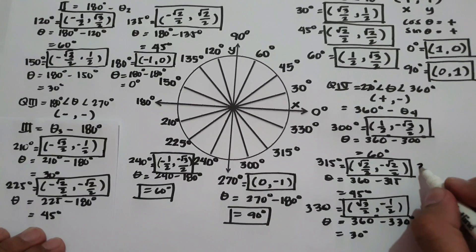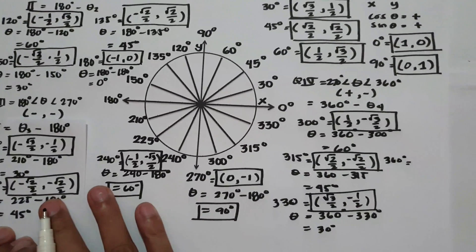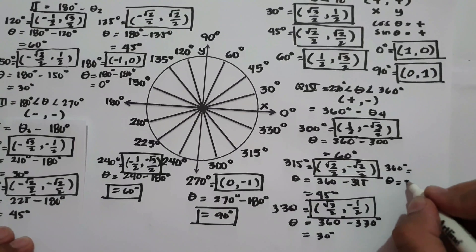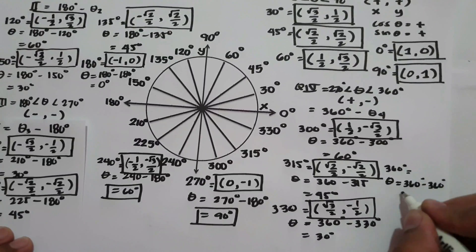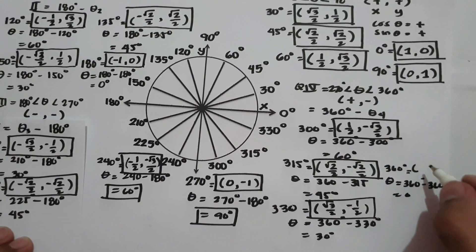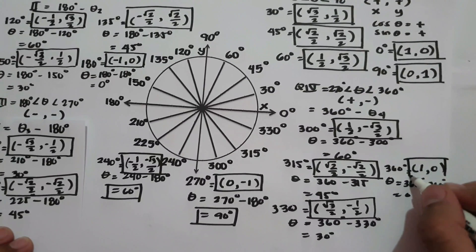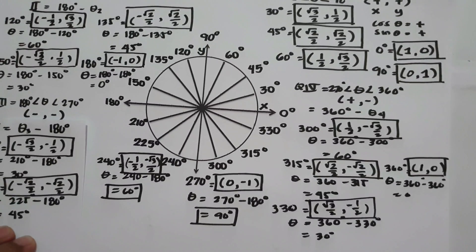How about 360 degrees? The reference angle is 360 minus itself, which is 0. Cosine 0 is 1 and sine 0 is 0. This will be the coordinates of 360 degrees. I hope you will learn from this lesson. Thank you so much for watching, and God bless us all.